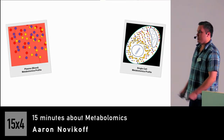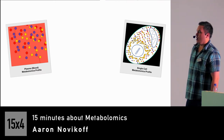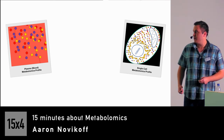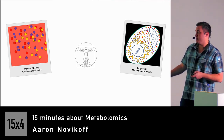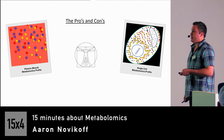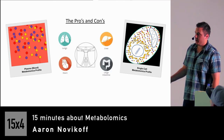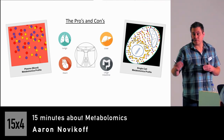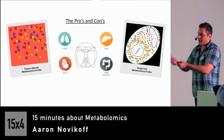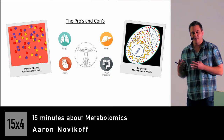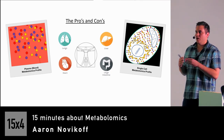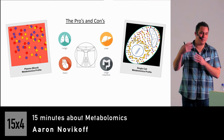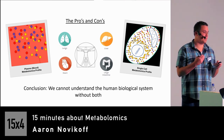Returning to metabolomics research broadly: one goal is to characterize metabolism at a systems level. Plasma metabolomics and single-cell metabolomics each have pros and cons. With plasma profiles we don't know where metabolites are coming from — lungs, liver, adipose tissue. With cellular metabolomics we can identify specific reactions but can't connect them to a systemic level. The conclusion is that we need both approaches to best understand biology.